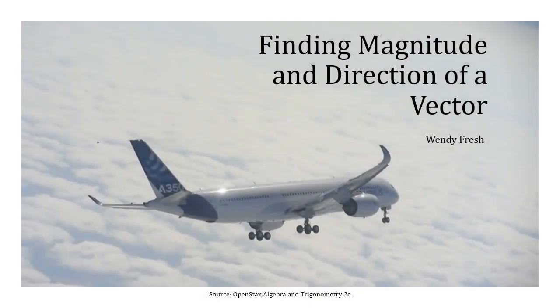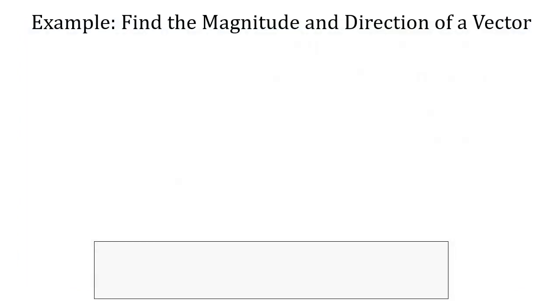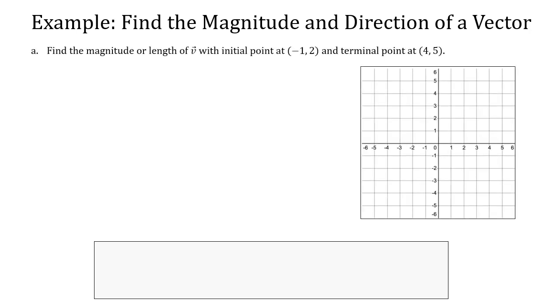In this video, we're going to take a look at finding the magnitude and the direction of a vector. So let's begin with an example. Find the magnitude or the length of vector V that has initial point at negative 1 comma 2 and terminal point at 4 comma 5.